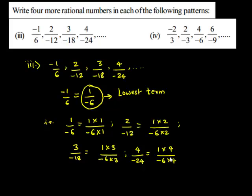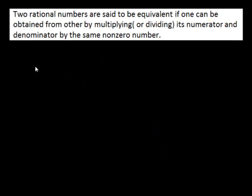This shows that these rational numbers are equivalent rational numbers. Let us see the definition of equivalent rational numbers: two rational numbers are said to be equivalent if one rational number can be obtained from the other by multiplying or dividing its numerator and denominator by the same non-zero number.